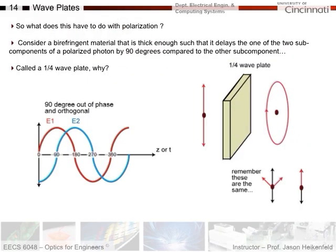So, what does this have to do with the lecture today? And what does it have to do with polarization? Well, consider a birefringent material that is thick enough such that it delays one of the two subcomponents of a polarized photon by 90 degrees compared to the other component. So, let's say we had two photons. Here's the first, here's the second. And let's say they started out in phase, just like we had before. Remember when we had, we said we'll have this is one photon, this is the other, and together they form a single polarization for the resultant. But let's say it starts like that, and it goes through this material such that the second one is delayed by 90 degrees compared to the first one. So, this got delayed in phase by 90 degrees. What happens?